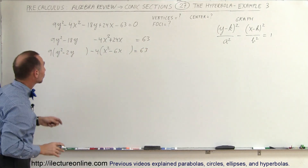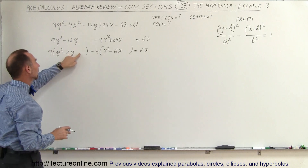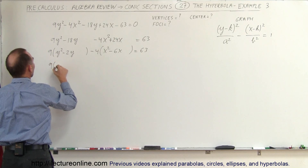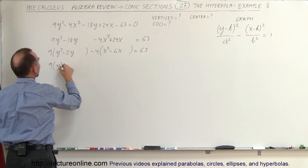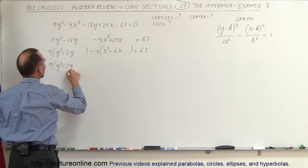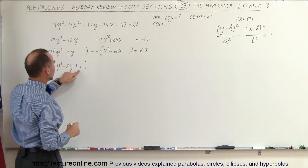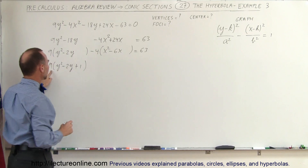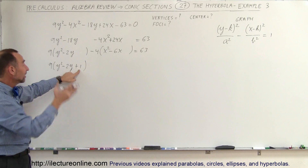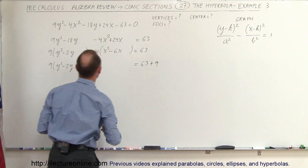Now we complete the square for y. We take half the coefficient of y, which is half of negative 2, giving minus 1, squared to get plus 1. We add that inside: 9 times (y squared minus 2y plus 1). Since we multiplied by 9, we actually added 9 to the left side, so we must add 9 to the right side as well.